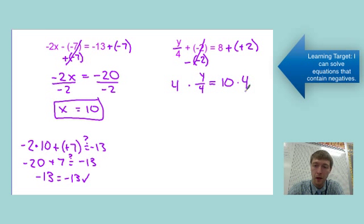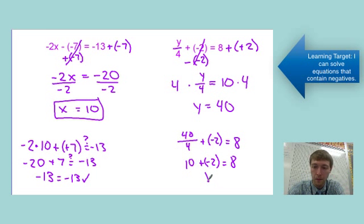Multiply both sides by 4. y equals 40. Plug that back in for y for our check step: 40 divided by 4 plus negative 2. 40 divided by 4 is 10. 10 plus negative 2—we have a positive plus a negative, so they're working against each other. It pulls it back toward 0 but not all the way to the negatives, so 8 equals 8.